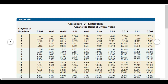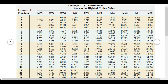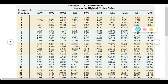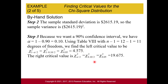Here's the chi-squared distribution table. The degrees of freedom are the rows, the area to the right is the columns, and the critical values are within the table. For 11 degrees of freedom with area 0.95 to the right, we get 4.575. For the right critical value, alpha is 0.10, divide by 2 gives 0.05, and at 11 degrees of freedom that gives us 19.675.